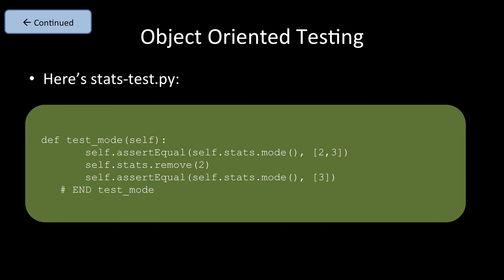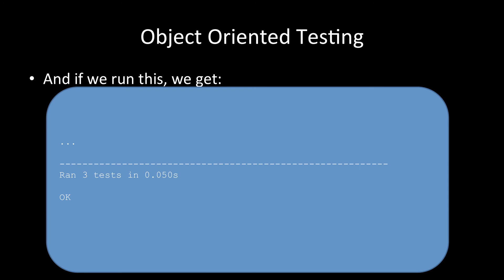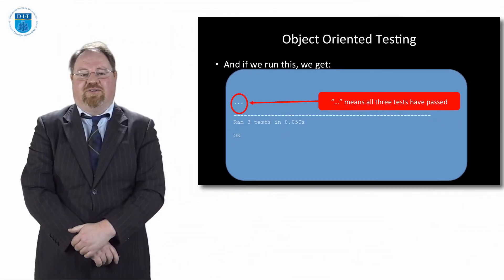And a test for the mode is to check if the mode, the most occurring values are two and three. And then if we remove one number two, then the mode, the most occurring value will be the number three. So there are three test methods. The first method has one test within it. The second two methods have two tests within them each. If we run them, what we'll get is dot, dot, dot. And as we know, dot dot dot means all three tests have been passed. We ran these three tests in 0.05 seconds and they're all okay.